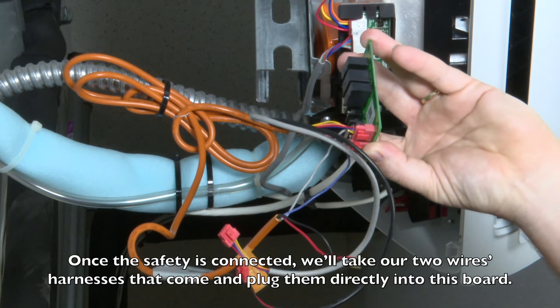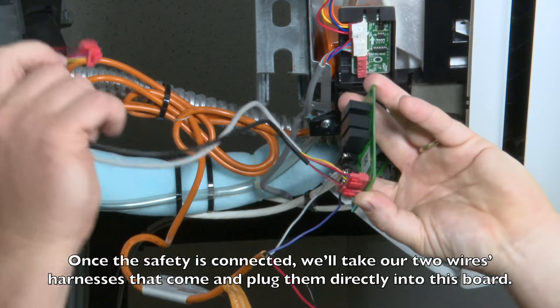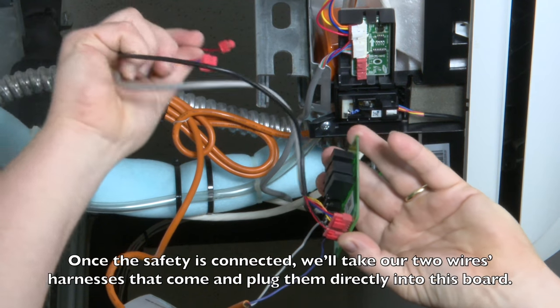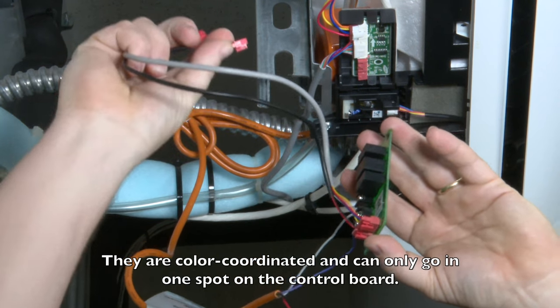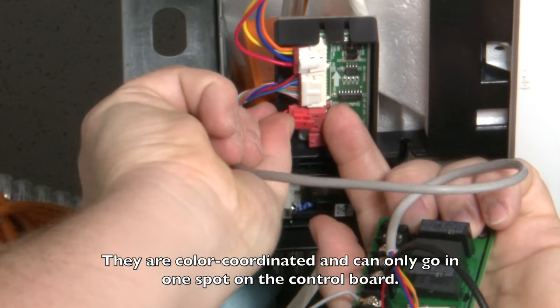Once the safety is connected, we'll take our two wire harnesses and plug them directly into this board. They are color coordinated and can only go in one spot on the control board.